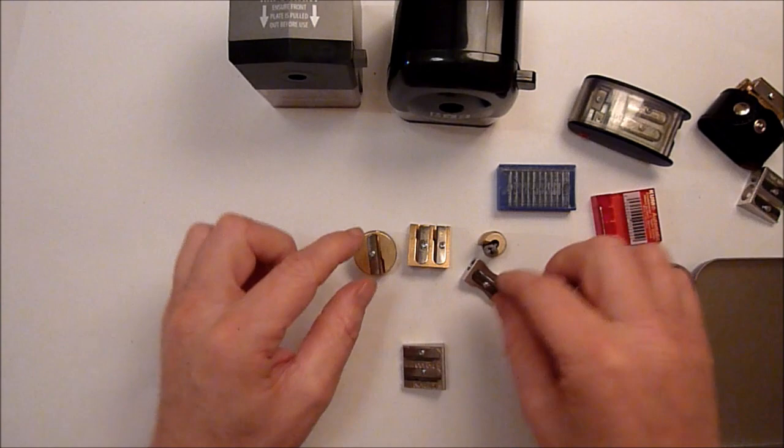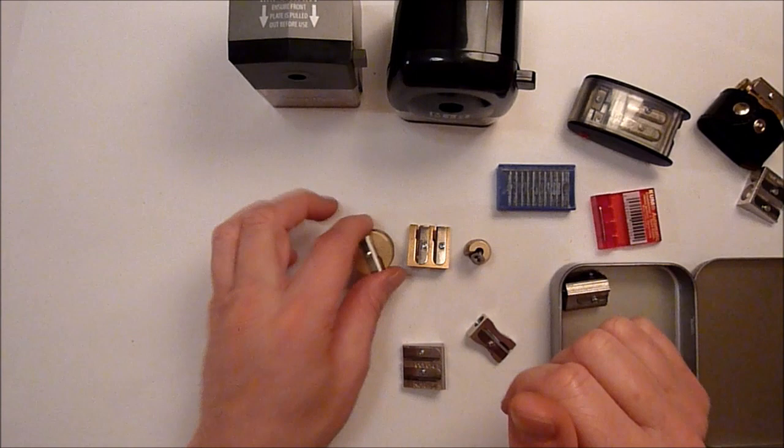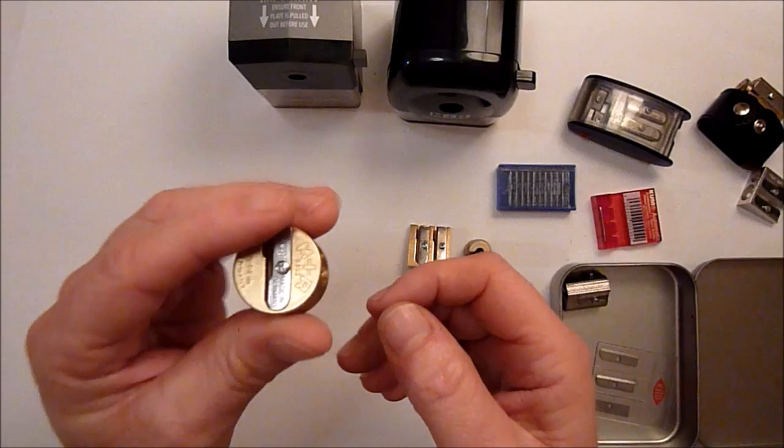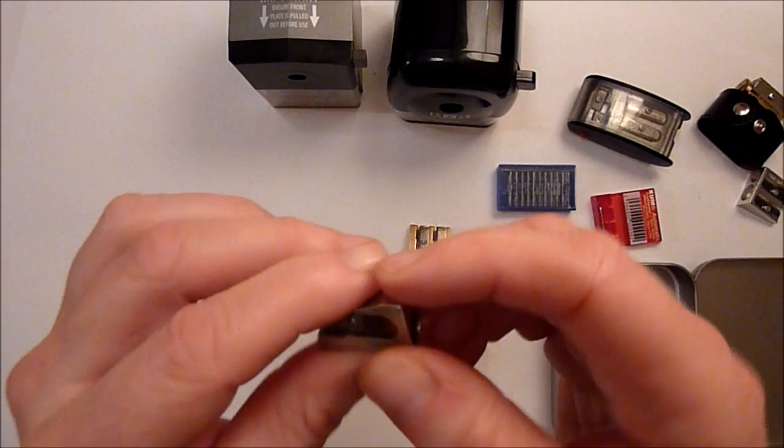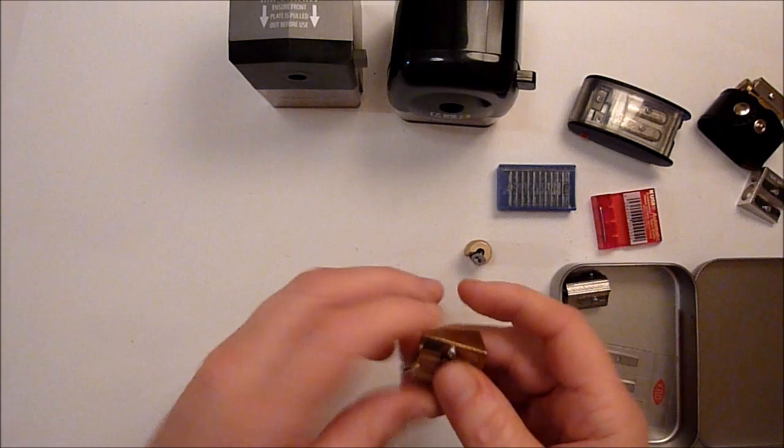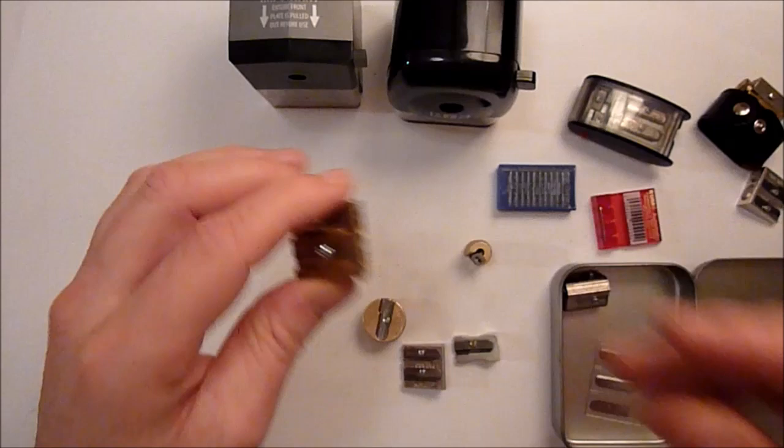But yeah, I mean, my recommendation would definitely go for the M&R pencil sharpeners, particularly the brass ones, and I'll tell you why. They're really heavy in the hand, which is a good thing, because it's a lot more stable when you're actually sharpening the pencil. Whereas these smaller, lightweight magnesium ones, they're so light that they kind of twist a little bit with the pencil when you're turning them. But the heavier weight brass just feels so much nicer when you're sharpening your pencils.